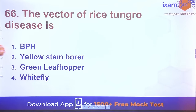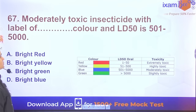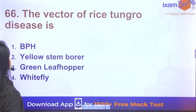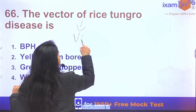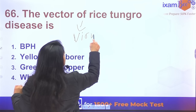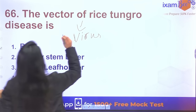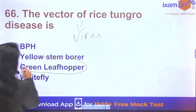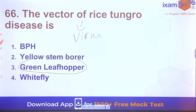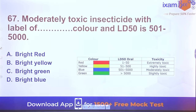Question 65: The vector for rice tungro disease — this is also a viral disease. The vector for rice tungro disease is the green leafhopper.